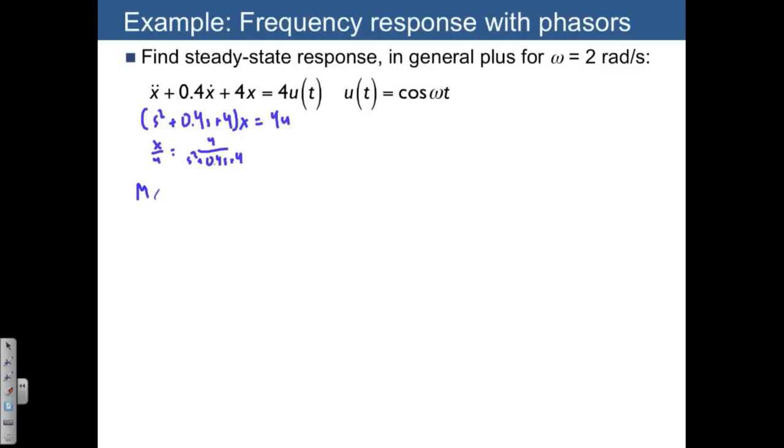We want to evaluate the magnitude and the phase, and all we need to do that is take the transfer function and plug in s equals j omega. This is going to be equal to 4 divided by quantity j omega squared plus 0.4j omega plus 4.